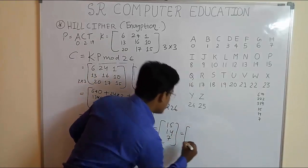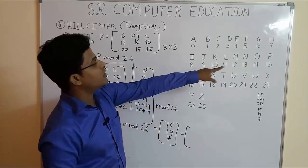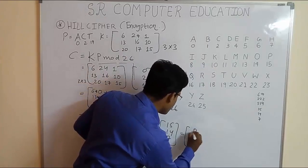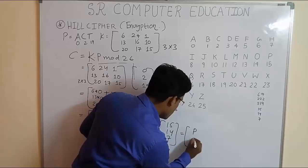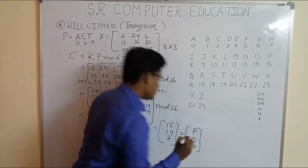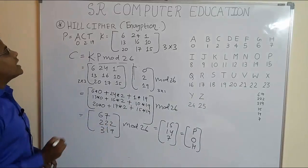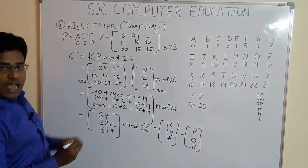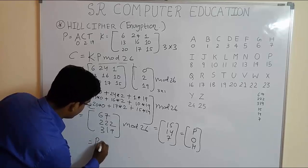The equivalent alphabet associated with these numbers: 15 is P, 14 is O, and 7 is H. So the ciphertext for the plaintext ACT is POH.